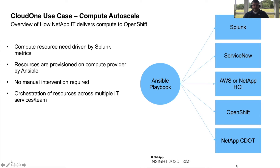Ansible is really at the core of this automation initiative. We run all of our Ansible playbooks from Ansible Tower. All these playbooks are stored in a Git repo which Ansible Tower is pulling from. Some of these playbooks are run on a per-request basis via a ServiceNow portal which makes an API call to Ansible Tower. Other playbooks are run on a schedule. Our AutoScale playbook, which is what we're going to be looking at today, runs on a 15-minute schedule.